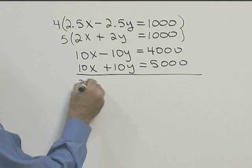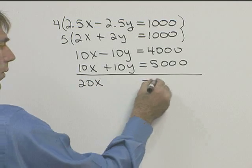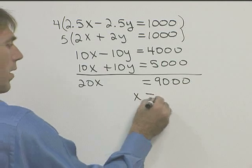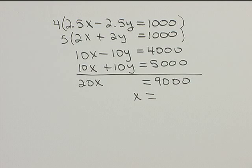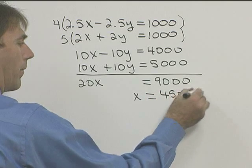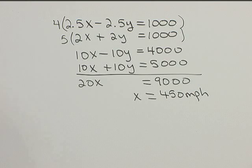So if we add, we get 20X equals 9,000. Dividing both sides by 20, we get X equal to 450 miles per hour. So X was the speed of our plane, so our plane is 450 miles per hour.